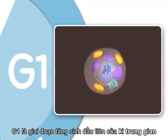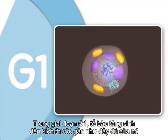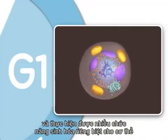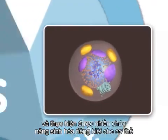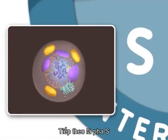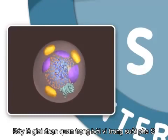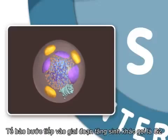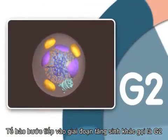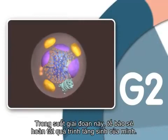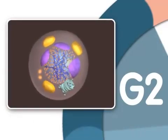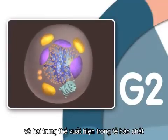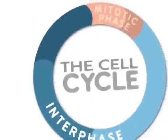G1, or Gap 1, is the first growth stage of interphase. In G1, the cell grows to nearly its full size and performs many of its specific biochemical functions that aid the organism. Next is the S, or synthesis phase, during which DNA in the nucleus is replicated. The cell then enters G2, or Gap 2, where it finishes growing. Once the cell has duplicated DNA and two centrosomes have appeared in the cytoplasm, mitosis can begin.